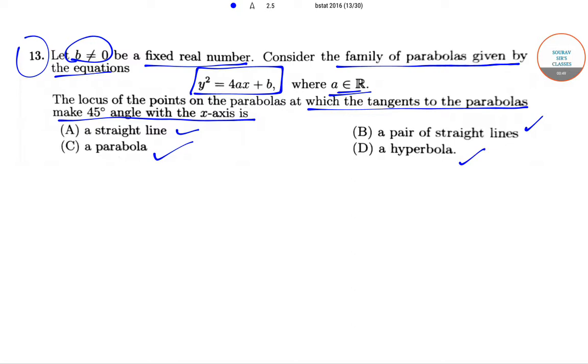So basically, the equation of the family of parabolas is given by y² = 4ax + b. Now if we differentiate it, this gives us 2y(dy/dx) = 4a.